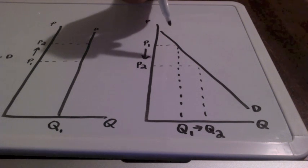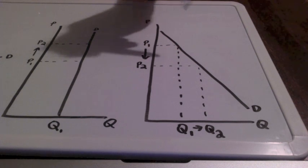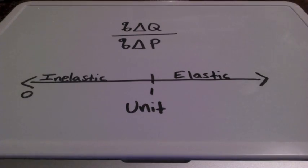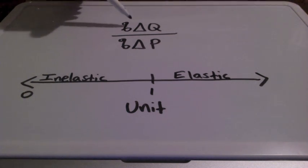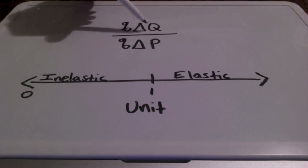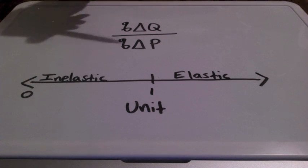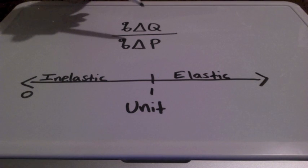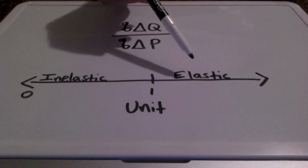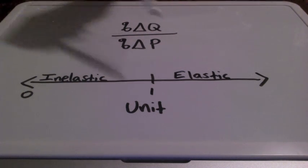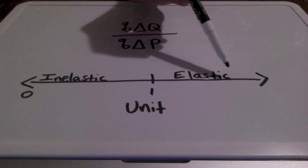Our price and quantity are going to change at the exact same rate. When we take a look at elasticity coefficients, we take the percent change in quantity divided by the percent change in price. That number will tell us if we are elastic, inelastic, or unit elastic. To have an elastic coefficient, the number is going to be greater than 1.